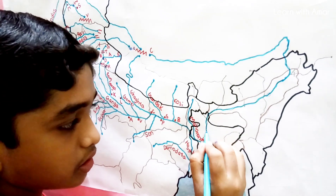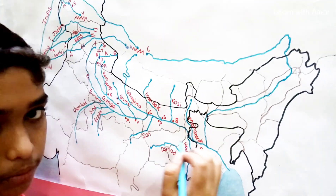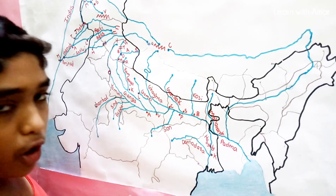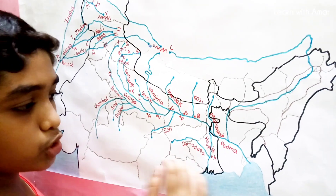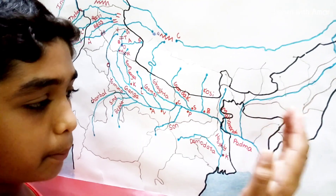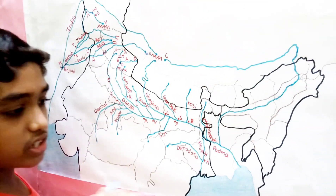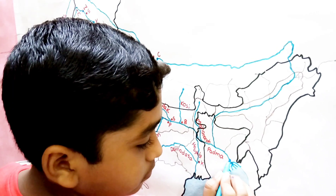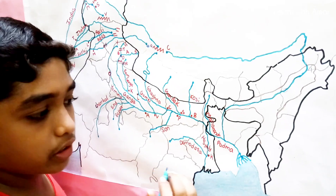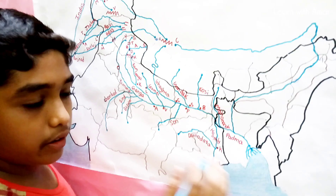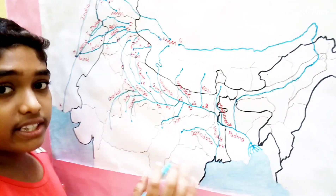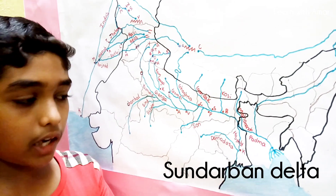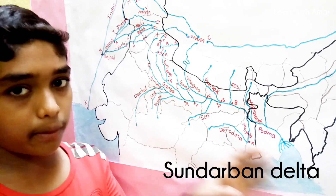In Bangladesh, it joins with the Padma or Ganga, and at last joins the Bay of Bengal. Ganga and Brahmaputra together make the largest delta in the world in Bangladesh, which is called the Ganga-Brahmaputra Delta, or Sundarbans Delta, or Bengal Delta.